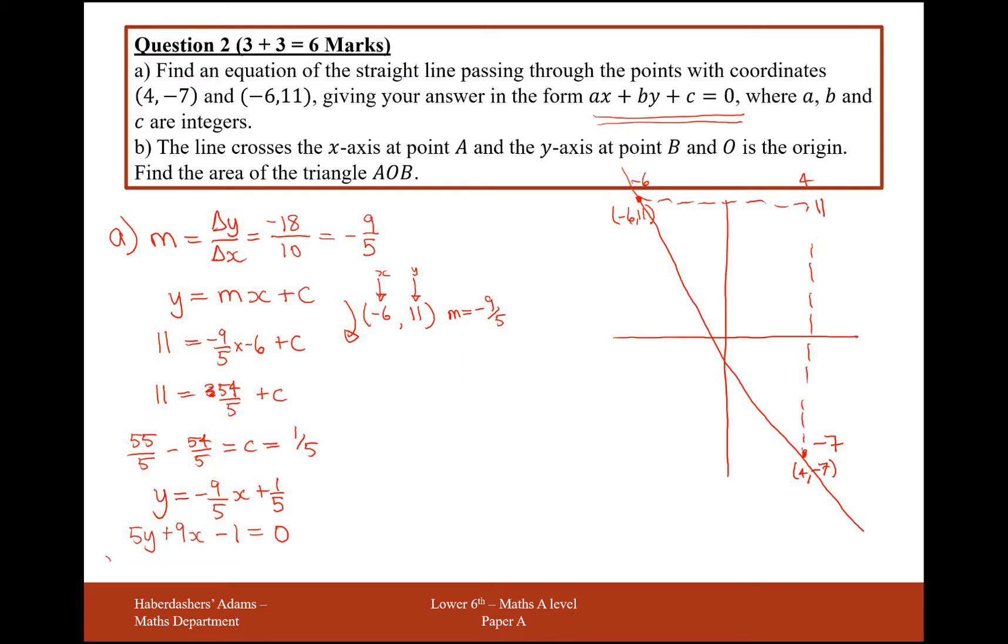So effectively, in this solution that I've got here, I've got a value of a of 9, b is my value 5, and c is my value -1.